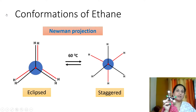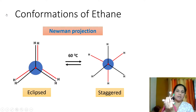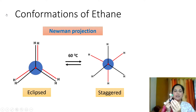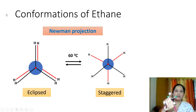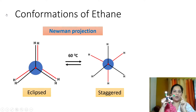Now suppose I keep moving the carbon-carbon bond through another 60 degrees. Again, you can see only the front hydrogens — so this is the eclipsed confirmation again. Now, suppose I rotate through another 60 degrees. Now you can see all the hydrogens, so this is the staggered confirmation.